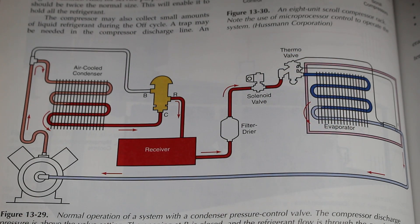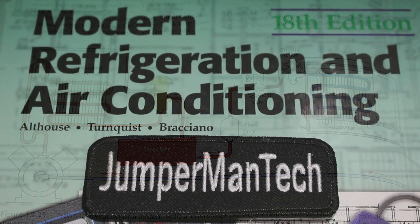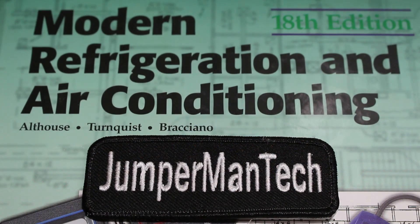In my next video, I will explain further on why superheat and subcooling are important, as well as go into further detail on how to find and calculate them in real-life application. Superheat is just the temperature above the saturation temperature, and subcooling is the temperature below its saturation temperature. If anybody found this video interesting or helpful, please drop a like, comment, and subscribe. I'll catch you all next time.